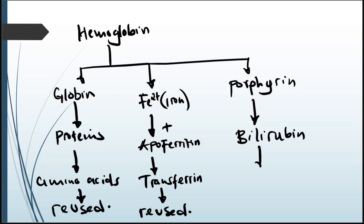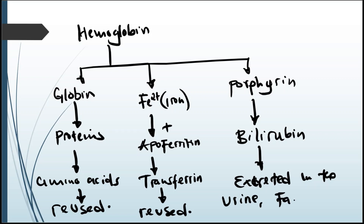Bilirubin is excreted — it is excreted in the urine, which gives urine its characteristic yellow color, and also in the feces. So iron plus porphyrin gives you heme, and hemoglobin is made up of heme plus globin. Everyone needs to know how hemoglobin is separated after it is broken down.